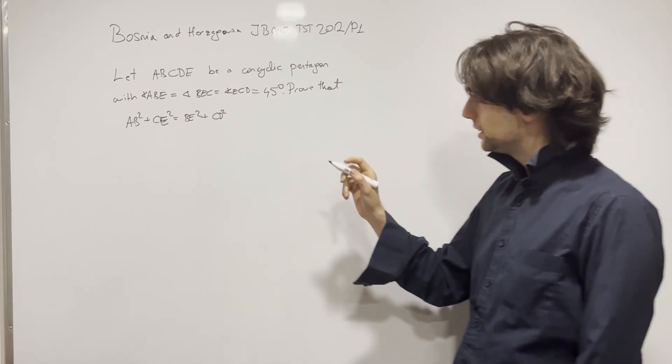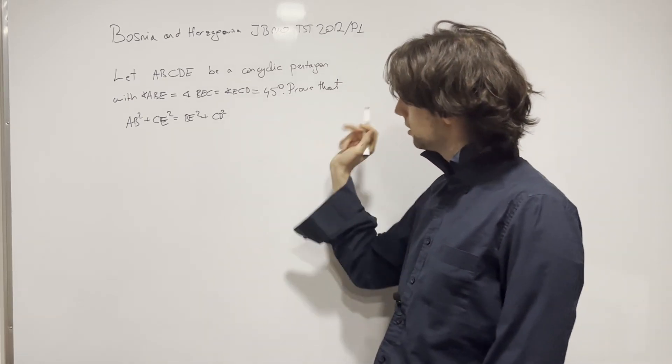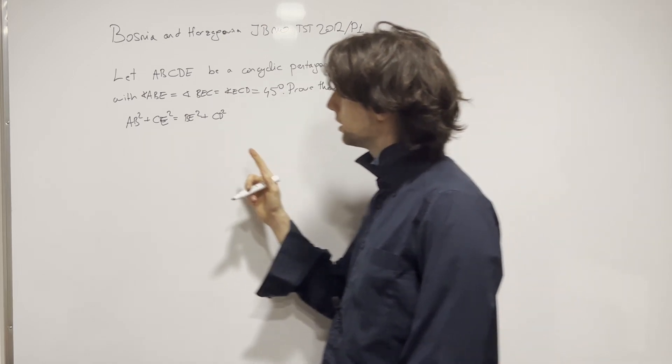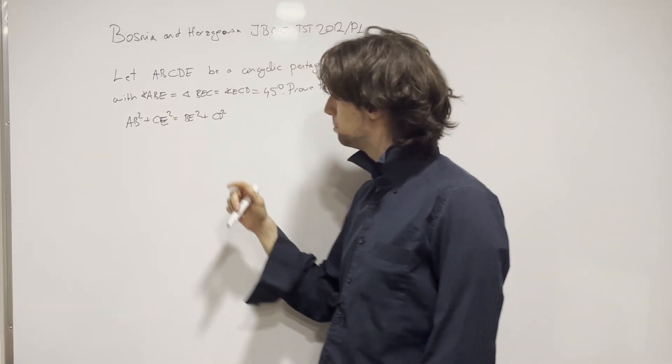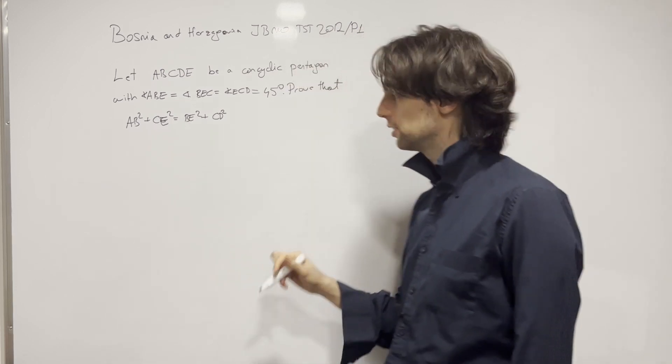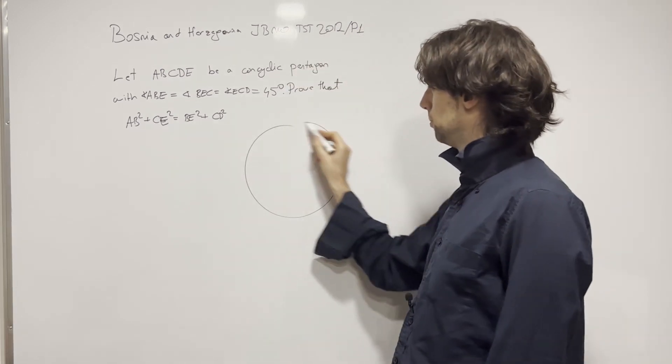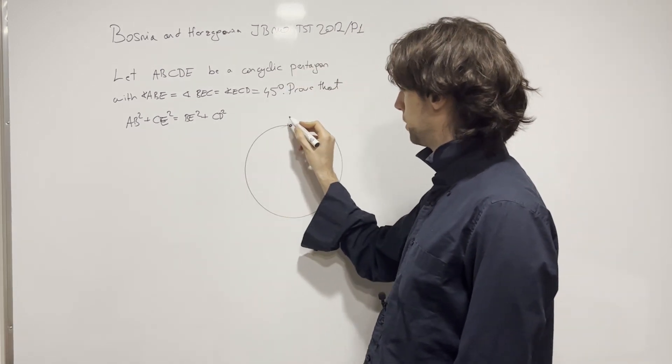So let's see. A, B, C, D, E is a cyclic pentagon. It's a pentagon such that ABE, BCE, and ECD are 45 degrees. Let's draw the circle. Now let's first draw point A.